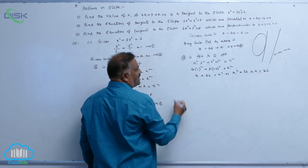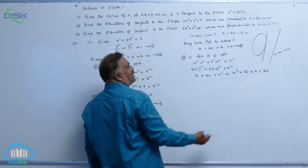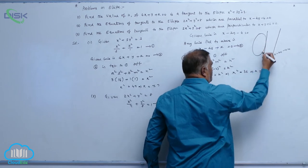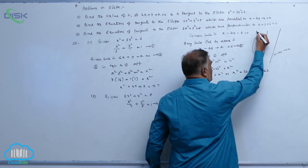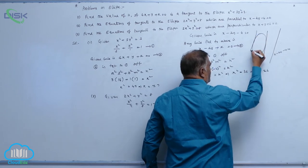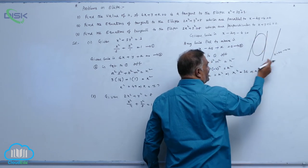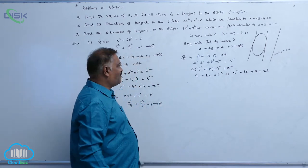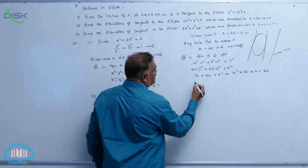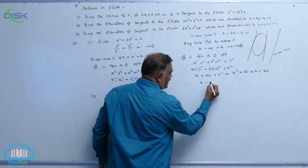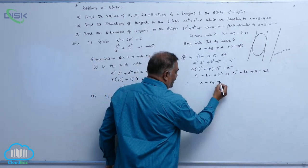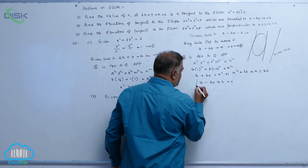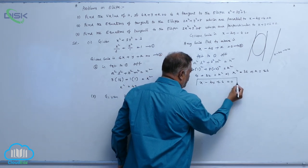So k equals plus or minus 6. One tangent is on one side and another tangent is on the other side, both parallel to the given line. Therefore the required tangents are x minus 2y plus or minus 6 equal to 0.